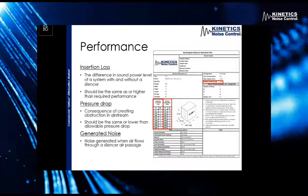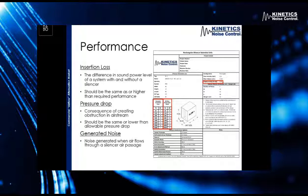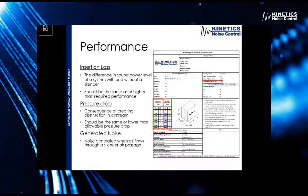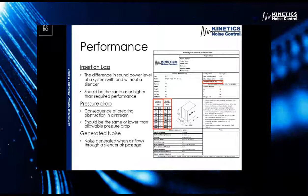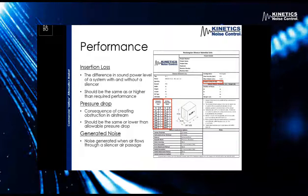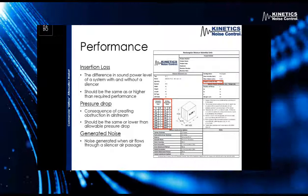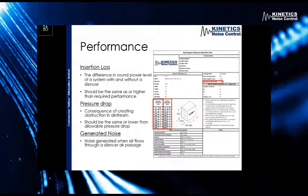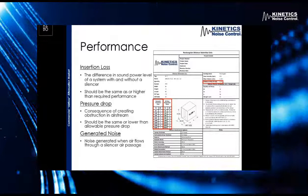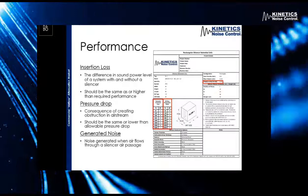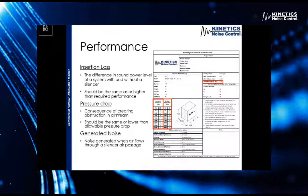We would want these insertion loss numbers to be the same or higher than what's required for a space. Next, we have pressure drop — this is the consequence of adding a silencer to the system. You don't get something for nothing. We're creating an obstruction in the airstream by adding the silencer, and that obstruction is going to cause a pressure drop. We measure it and list it on our submittals as well. Lastly, we have generated noise — the same way that the pressure drop is generated, we have turbulent airflow and an obstruction in the ductwork that causes some noise to be generated. For the most part, if we compare those generated noise numbers to the sound power levels of the unit the silencer is servicing, usually these numbers are quite a bit lower and negligible over the entire system.